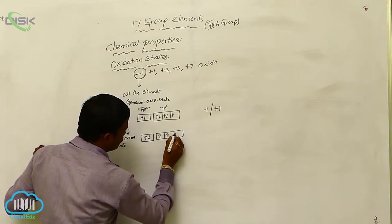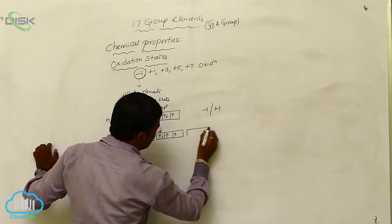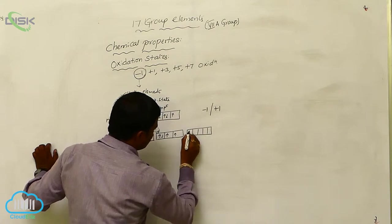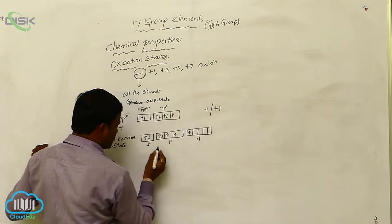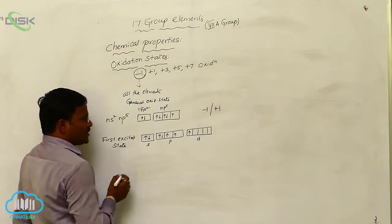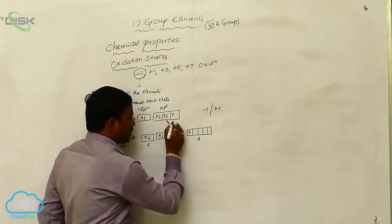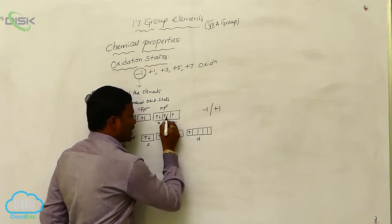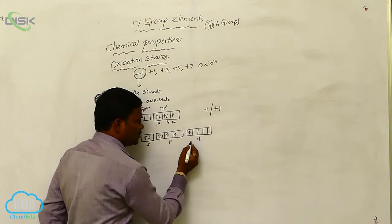1, 2, 3, 4 — and the 5th electron present here will jump into d orbitals. This is d orbital, this is p orbital, and this is s orbital. So in the first excited state, the electron present in pz or py orbital — I would like to consider it as px, py, pz — the second electron of the py orbital jumps into the d orbital.